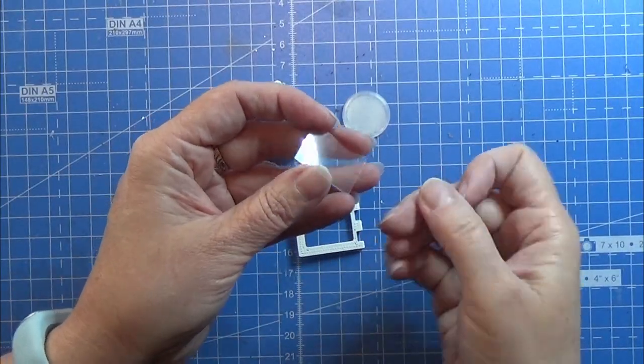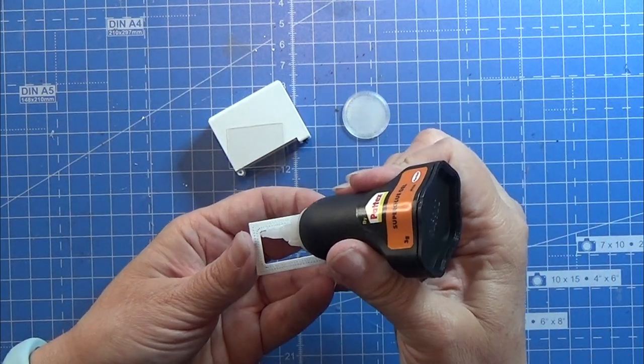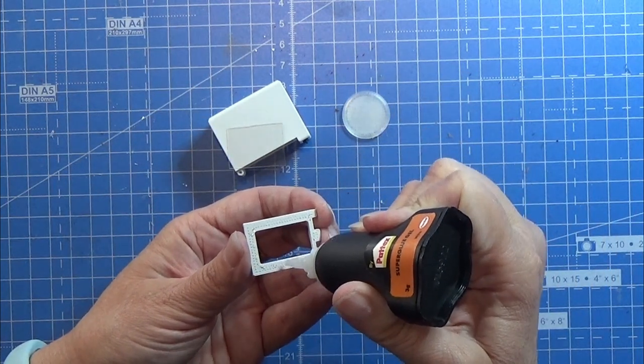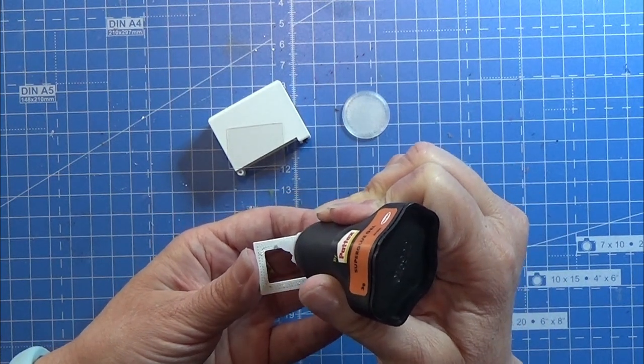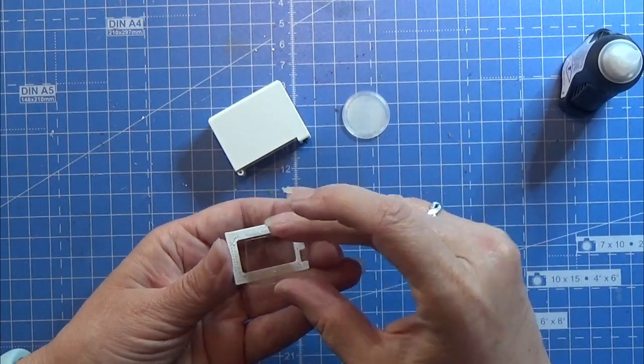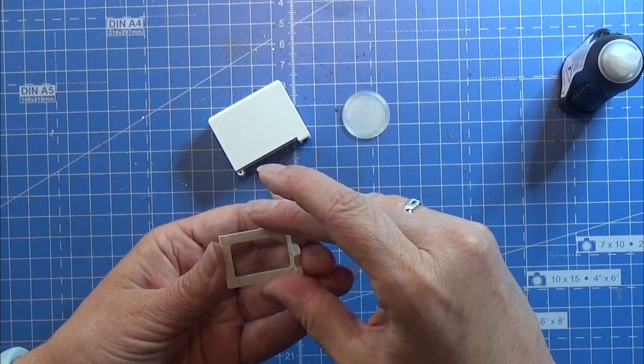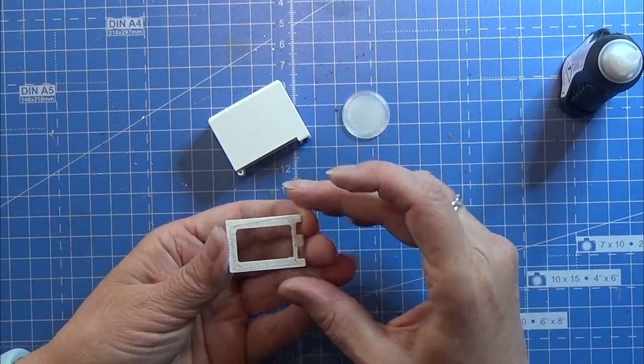Then I cut out a piece of this clear plastic from some toy packaging I had lying around. And I am gluing this little piece onto the inside of the door for the microwave. And I'm going to let that dry.